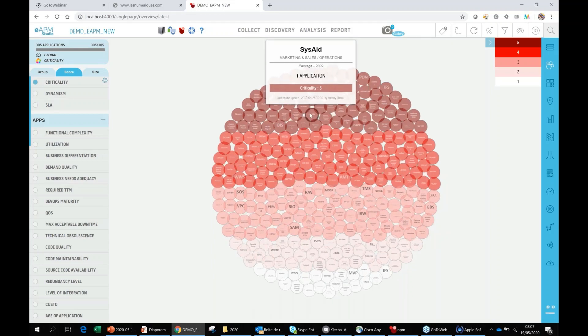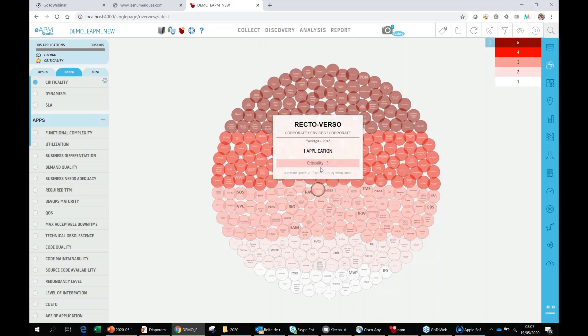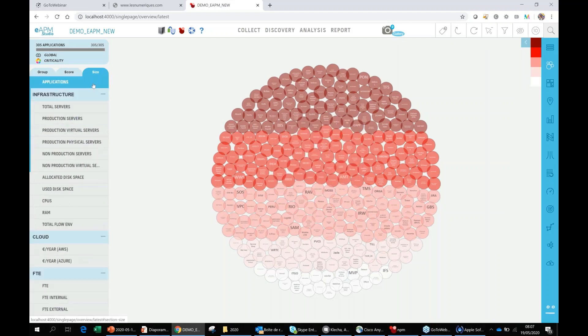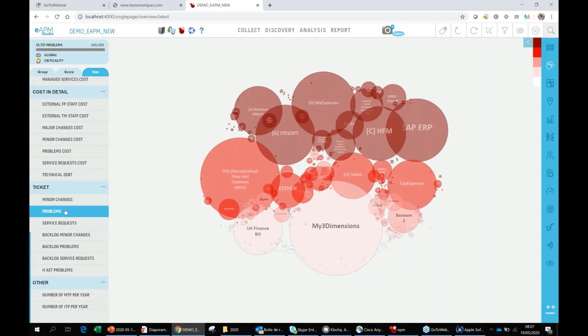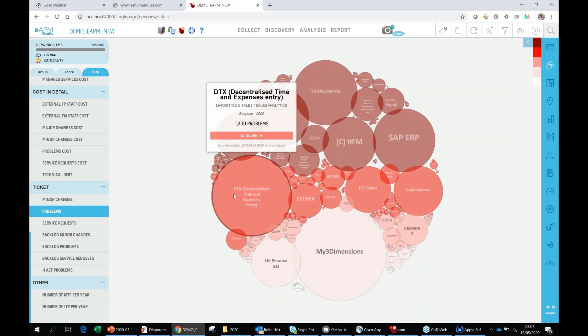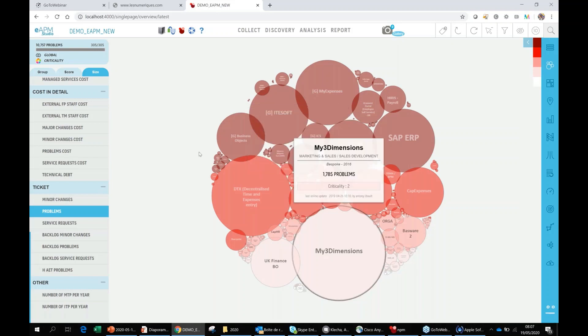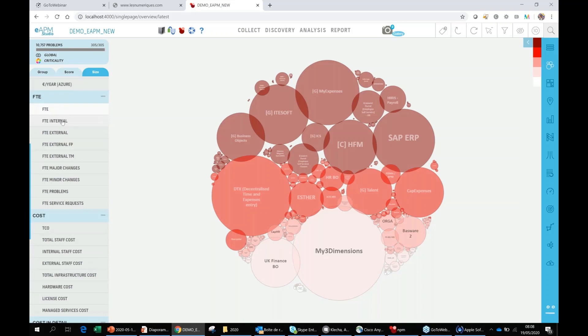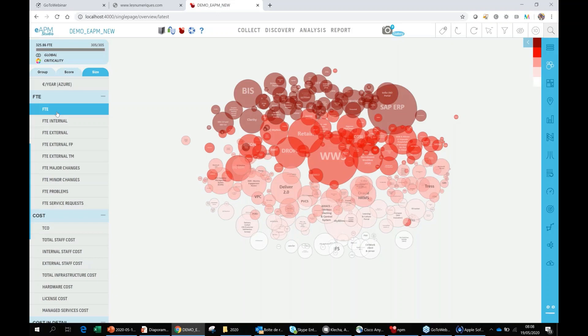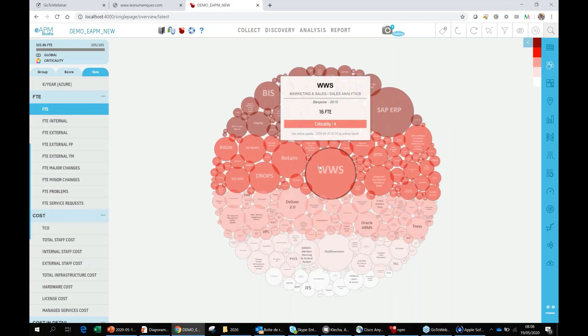We can play with some attributes to see those applications. Here I selected the business criticality. You can see different intensities of red. So darker is the bubble, more critical it is for the business. You see here five levels, but we could have three or two. We can configure everything. We can also represent size. For instance, if I have a ticketing tool, I can size the bubble by the number of tickets. Now I see the main contributor to the number of tickets in my landscape. This application is generating 22 problems per year on average, and this one more than 1,700.